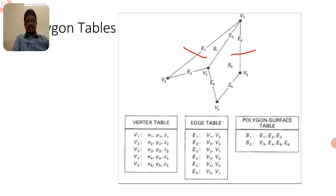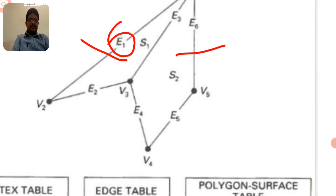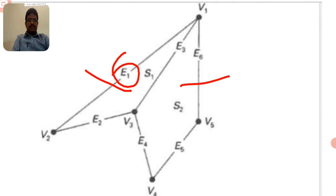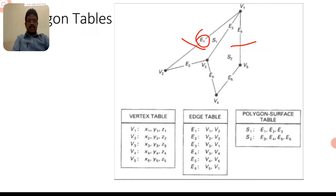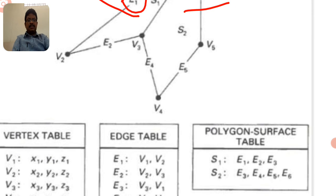In the edge table, an edge is always between two vertices. E1 is between V1 and V2, E2 between V2 and V3, E3 between V3 and V1, E4 between V3 and V4, E5 between V4 and V5, and E6 between V5 and V1. All edges of the polygon must be written in the edge table.